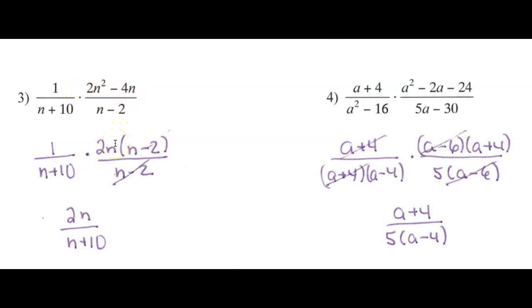So this is going to leave me 2n times n minus 2 in the numerator, n minus 2 in the denominator. This term on the left doesn't change, but I can cancel the n minus 2 terms. That's just going to leave me 2n over n plus 10.